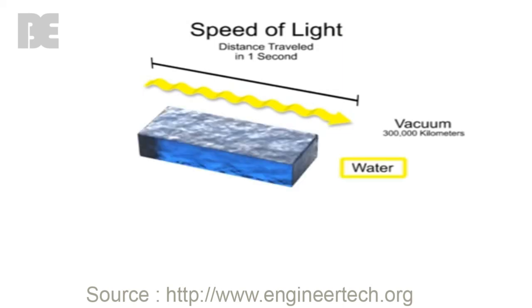In water, light travels at about 75% of its speed in a vacuum, or 225,000 kilometers per second.